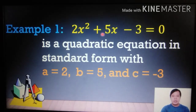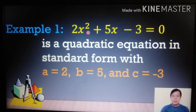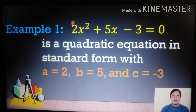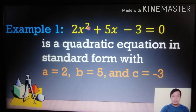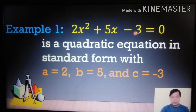This equation is already in standard form. To recognize standard form, notice the degrees decrease: x² term first, then x, then the constant. The coefficient of x² is a, the coefficient of x is b, and the constant term is c. So here, a = 2, b = 5, and c = −3.